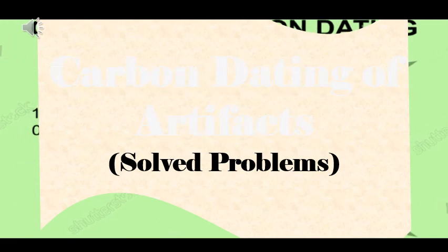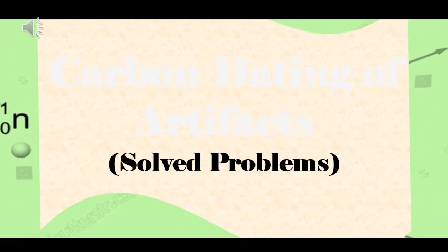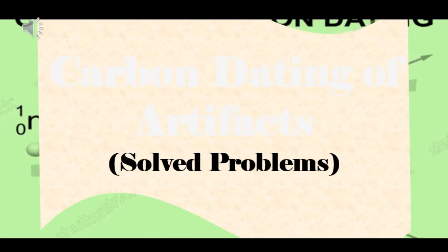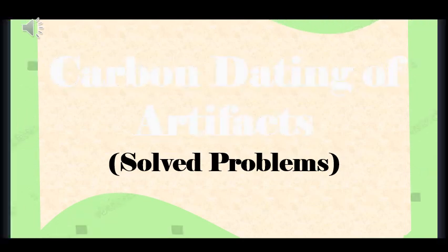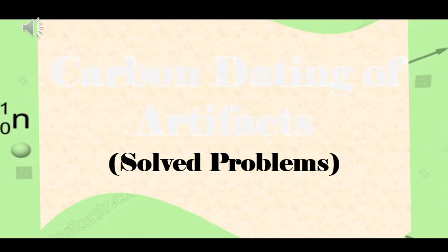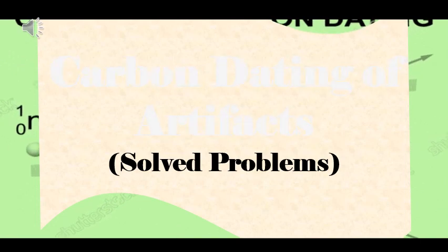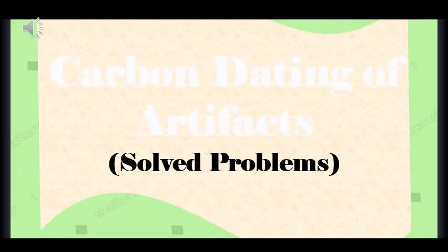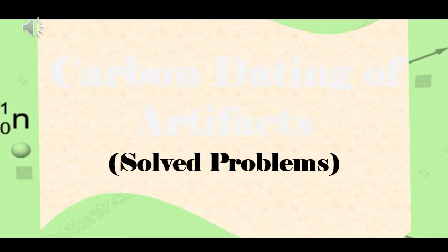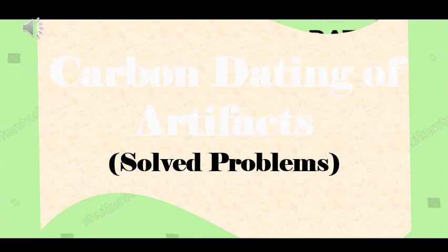How do scientists determine the approximate age of an artifact? In today's episode, we look into the mathematical computation of the age of fossils or archaeological specimens using carbon dating. Stick around till the end of this video. Watch and learn.